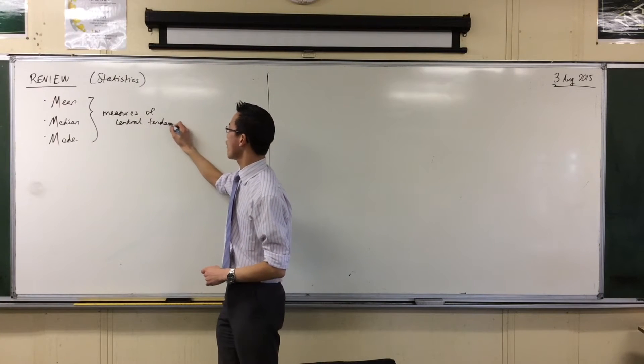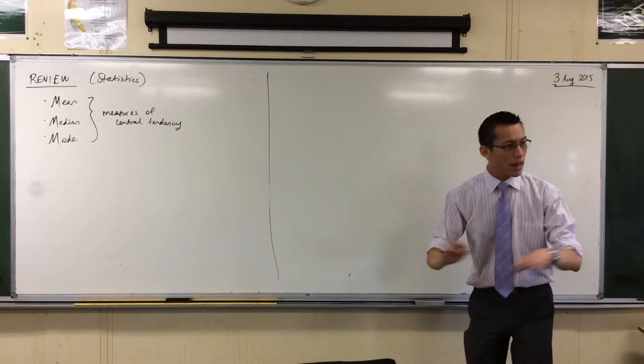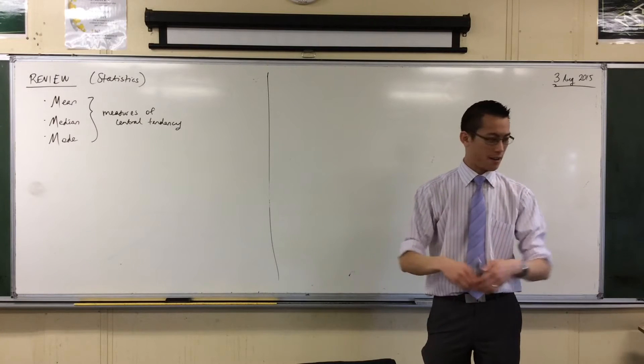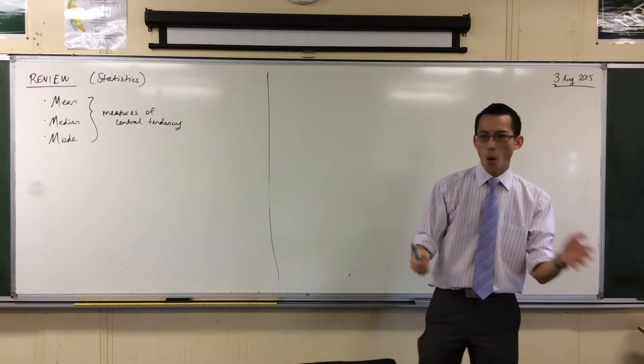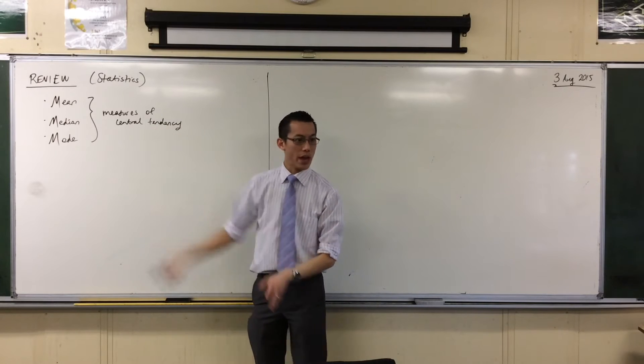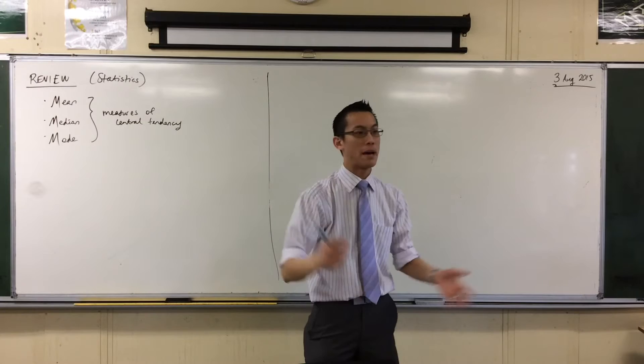central tendency. That's a bit of a fancy way of saying if I have a group of people, if I know all their heights or their ages or their income or whatever, what's the centre of the group like? What do they all tend towards? If I could summarise the whole group in one number, what would that be?